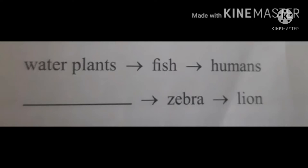Here, in the first one, you can see water plants, fish, and human. Can you identify the second food chain? Yes — zebra will eat grass.